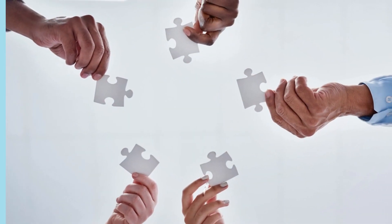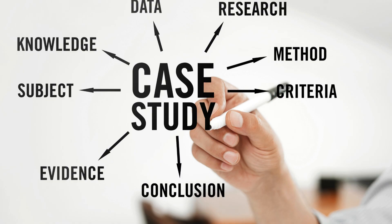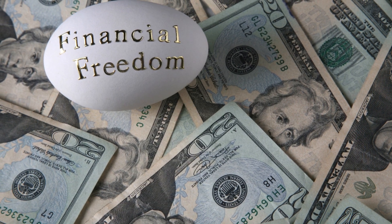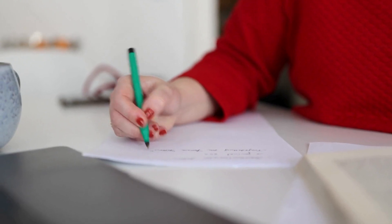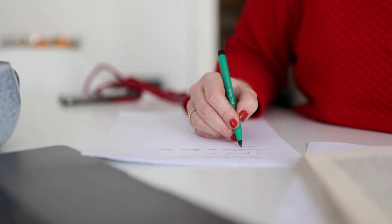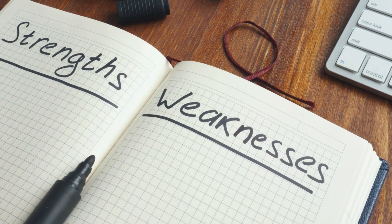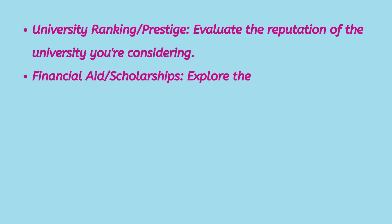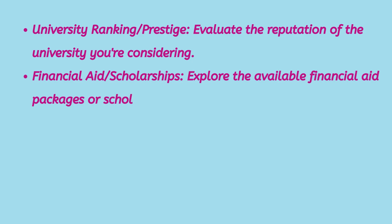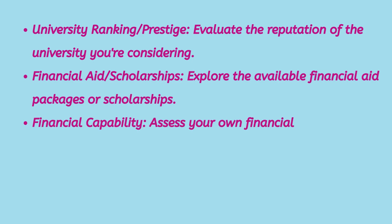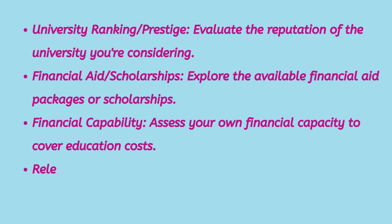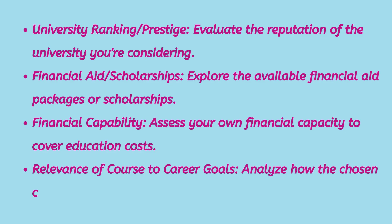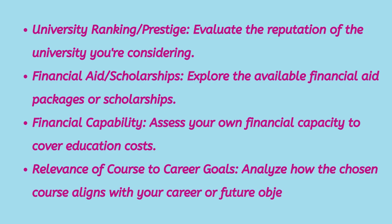Now friends, before we get into the process of preparing answers, it's important for you to understand your academic and financial situation with clarity. So let's grab a paper and pen and create a general overview considering the following factors: number one, university ranking or prestige — try to evaluate the reputation of the university; number two, the financial aid package or scholarships that you might have received; number three, your own financial capacity to cover education costs; and number four, analyze how the chosen course aligns with your career or future objectives.